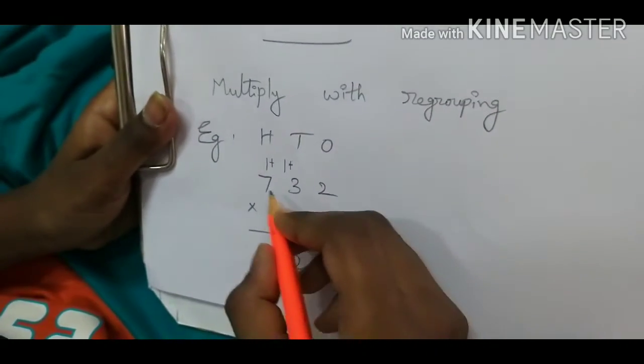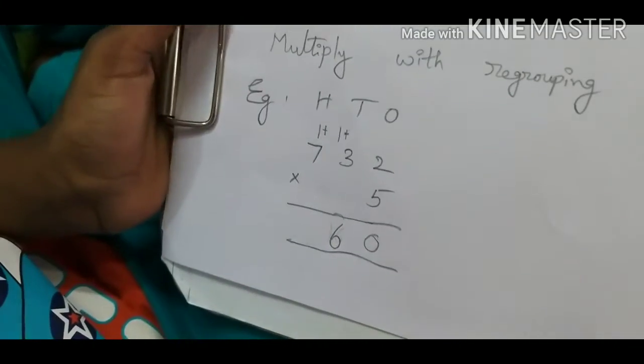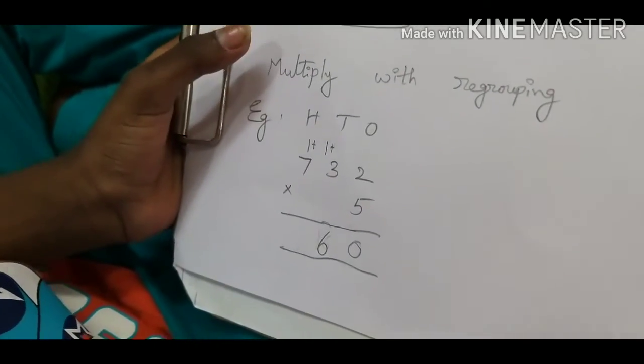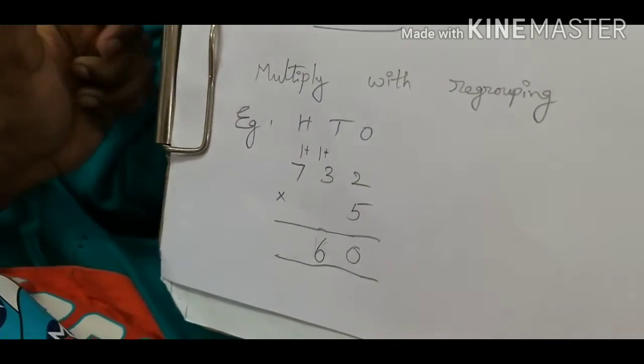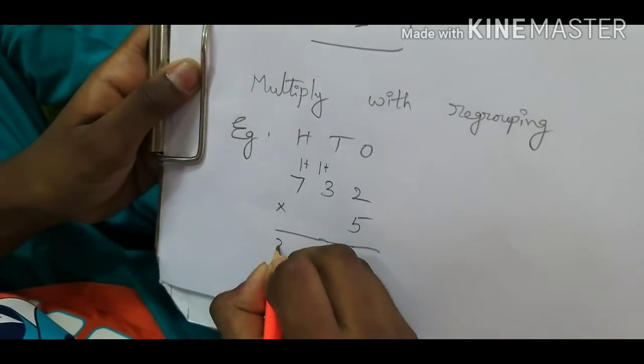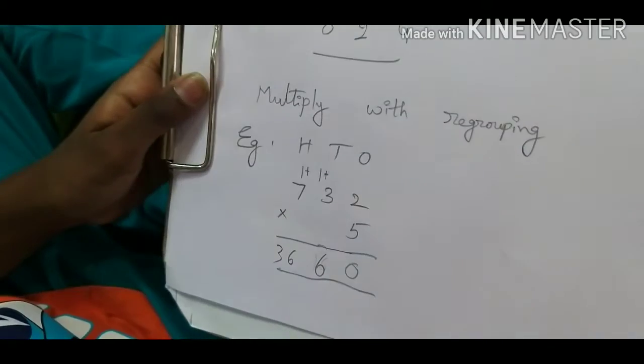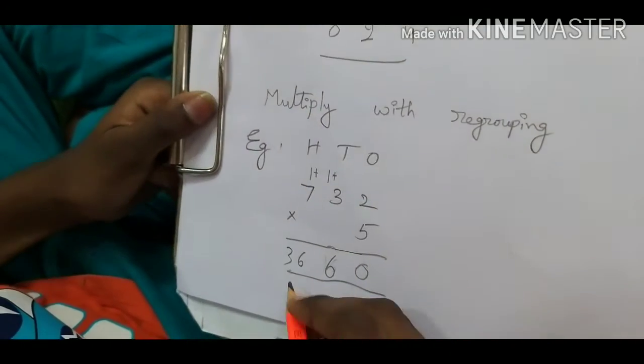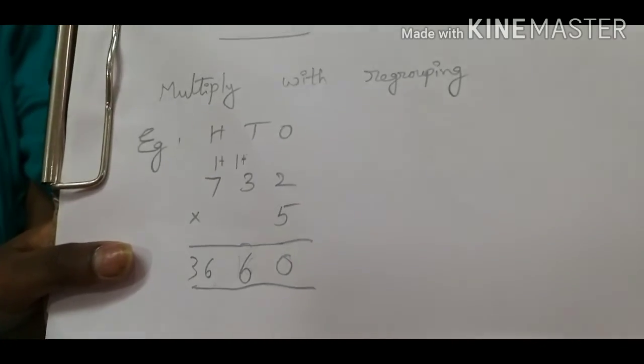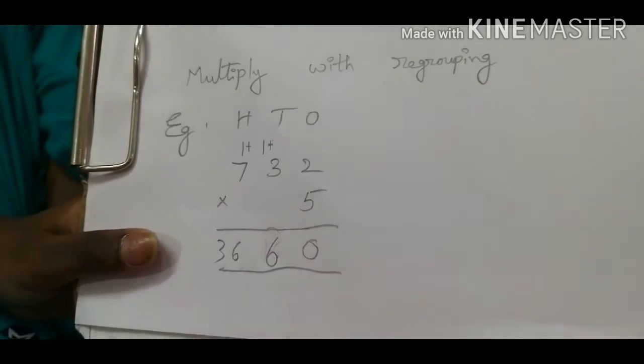5 times 7 is 35. We have to add 1 to 35. 36 is the answer here. So the answer is 3660. In this we have used addition also.